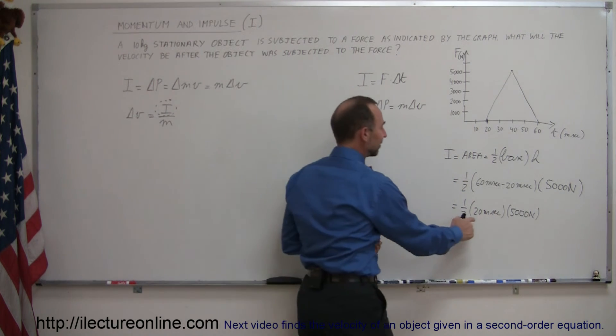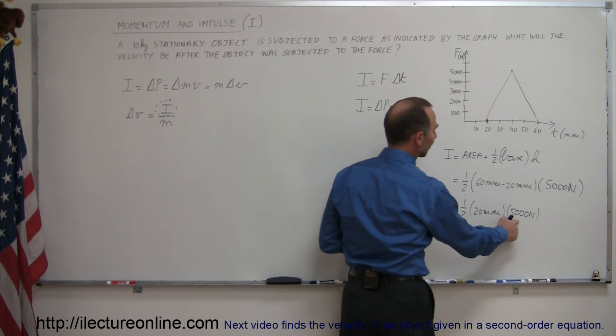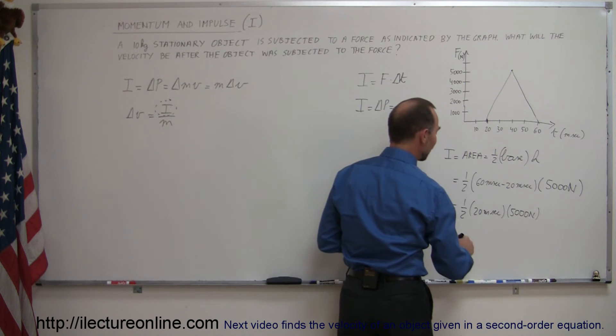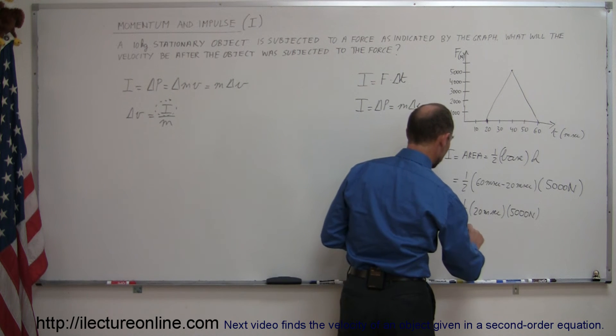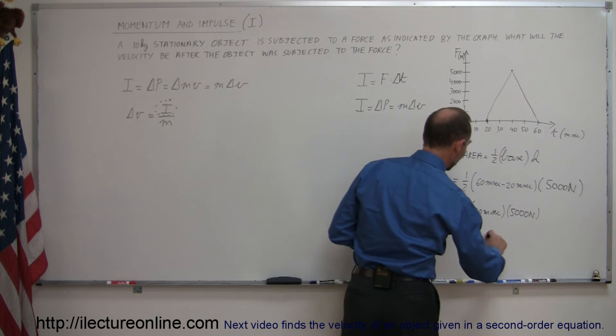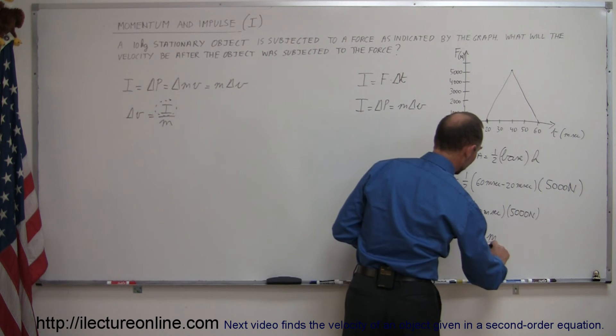So one half times 20 is 10, 10 milliseconds times 5000 newtons would be 50 kilogram meters per second.